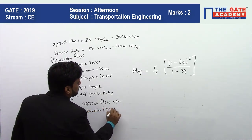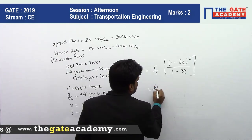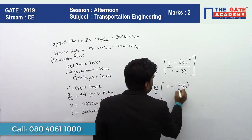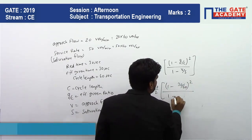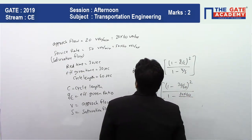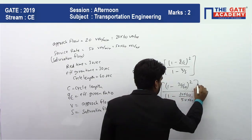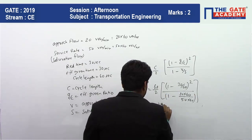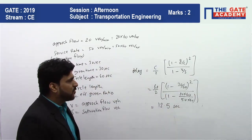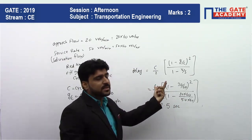All values are given; we just need to substitute them. So: delay = (60/2) × (1 − 30/60)² / (1 − (20×60)/(50×60)). Solving this equation gives an answer of 12.5 seconds delay per vehicle. This is a completely formula-based question — you just need to identify the values given in the question and substitute them into the formula.